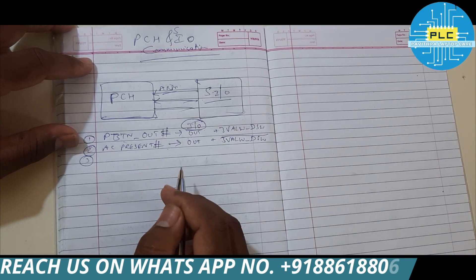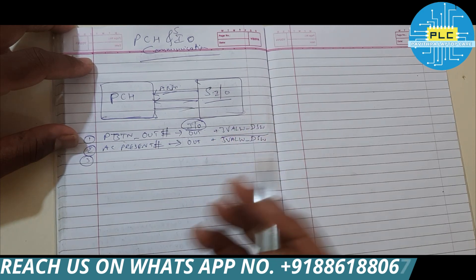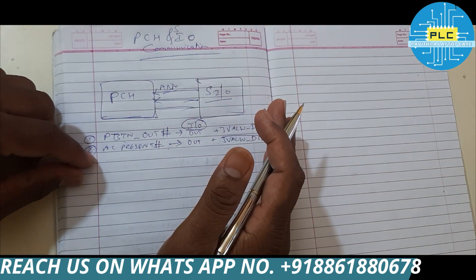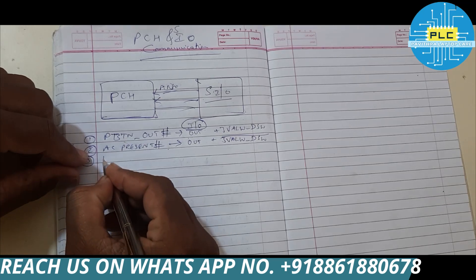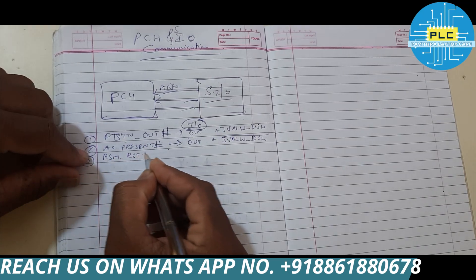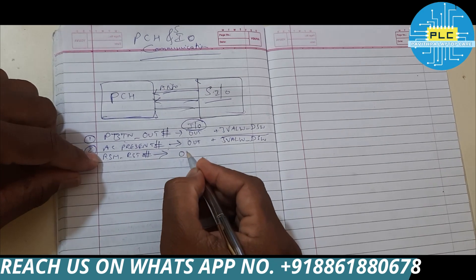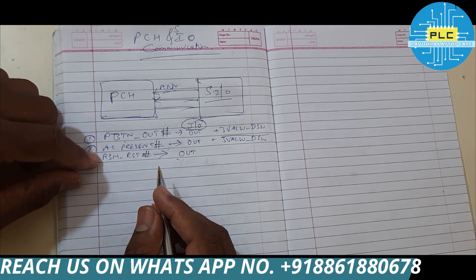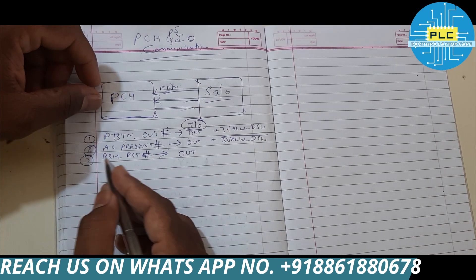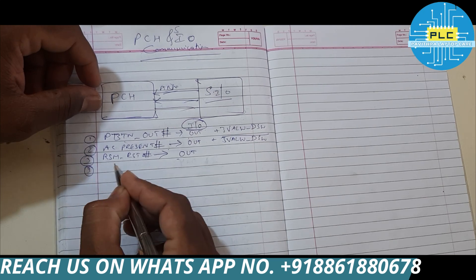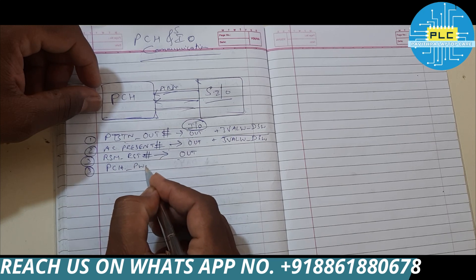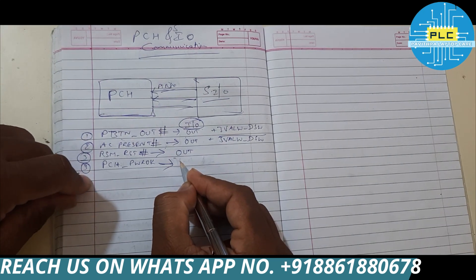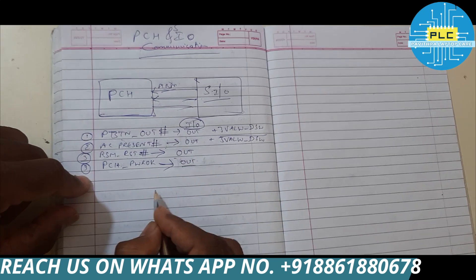The third signal is RSMRST hash. You know very well — before this signal appears, the previous two signals must be confirmed. RSM RST hash is output from Super I/O. Before this, we can consider PCH Power — this is also output from Super I/O.